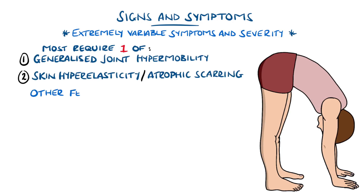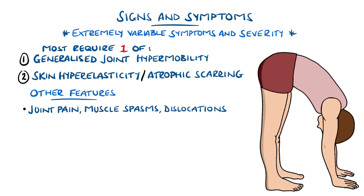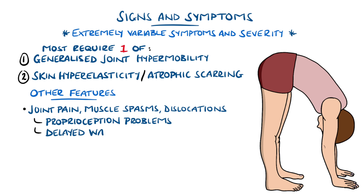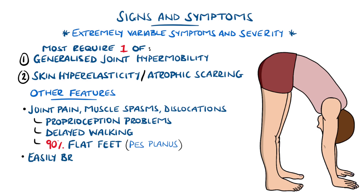Other features include joint pain that typically does not feature swelling, warmth, or erythema, and there may be muscle spasms and recurrent dislocations. There can be subtle signs like problems with proprioception, and there is often a history of delayed walking in infancy beyond 18 months. Around 90% of adult patients will also have flat feet. There may be easy bruising and a silky or velvety texture to the skin.